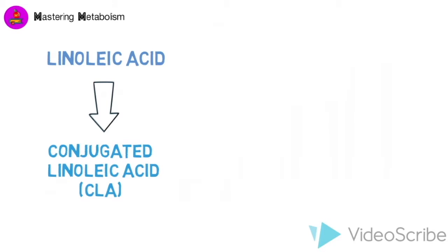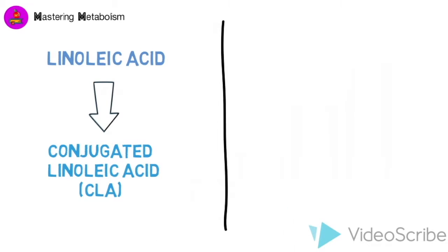CLA is an isomer of linoleic acid naturally found in the meat and dairy products derived from ruminants. Ruminants are mammals able to acquire nutrients by fermenting plant-based food in their stomachs through microbial actions.